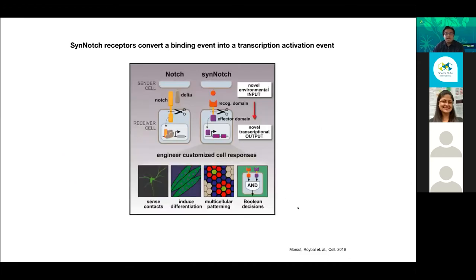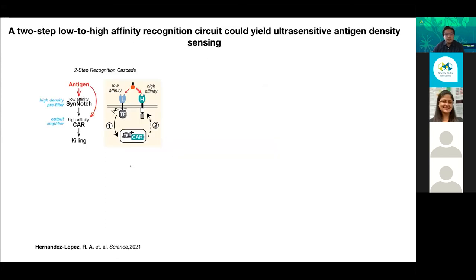What we want to engineer is the ability for these T-cells to count the amount of protein expressed on the surface of a target cell and make a decision — to kill if there are high levels of the protein, but not to kill if there are low levels. I need to introduce the Notch receptor. These receptors are expressed on the surface of the cell, and via cell-cell contact you can activate specific transcription programs. You can replace the outside of this Notch protein with a recognition domain against a protein of your choice, and also replace the intracellular portion with any transcription factor to activate a new program.